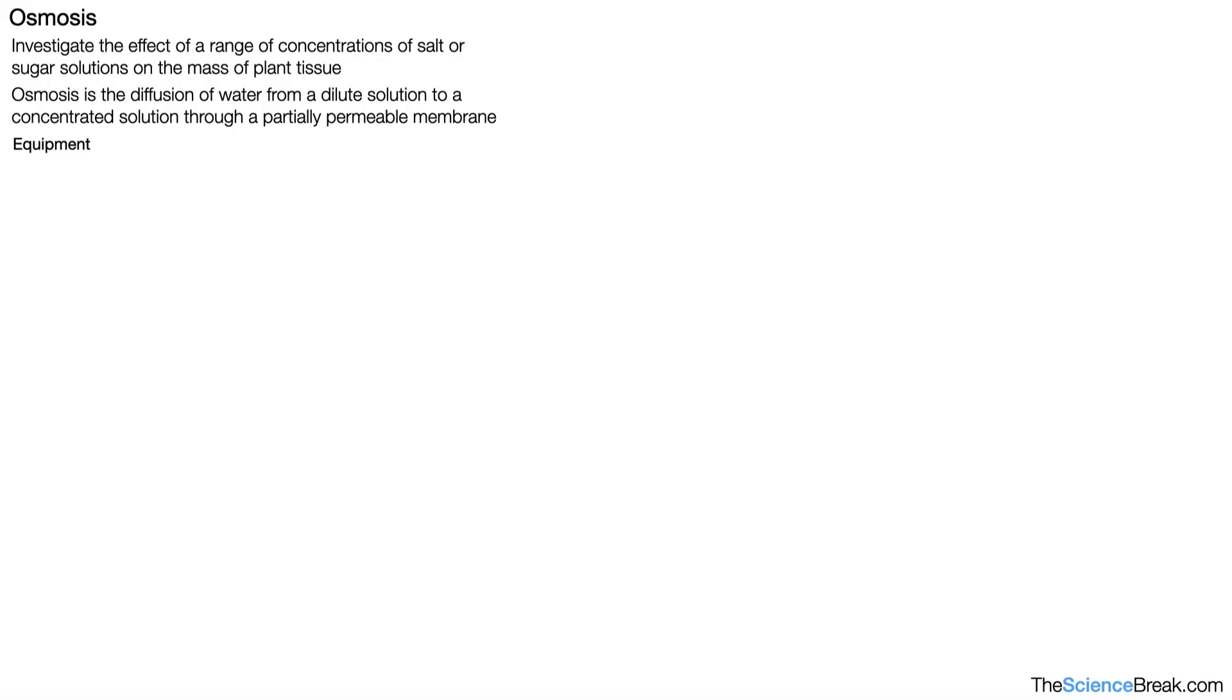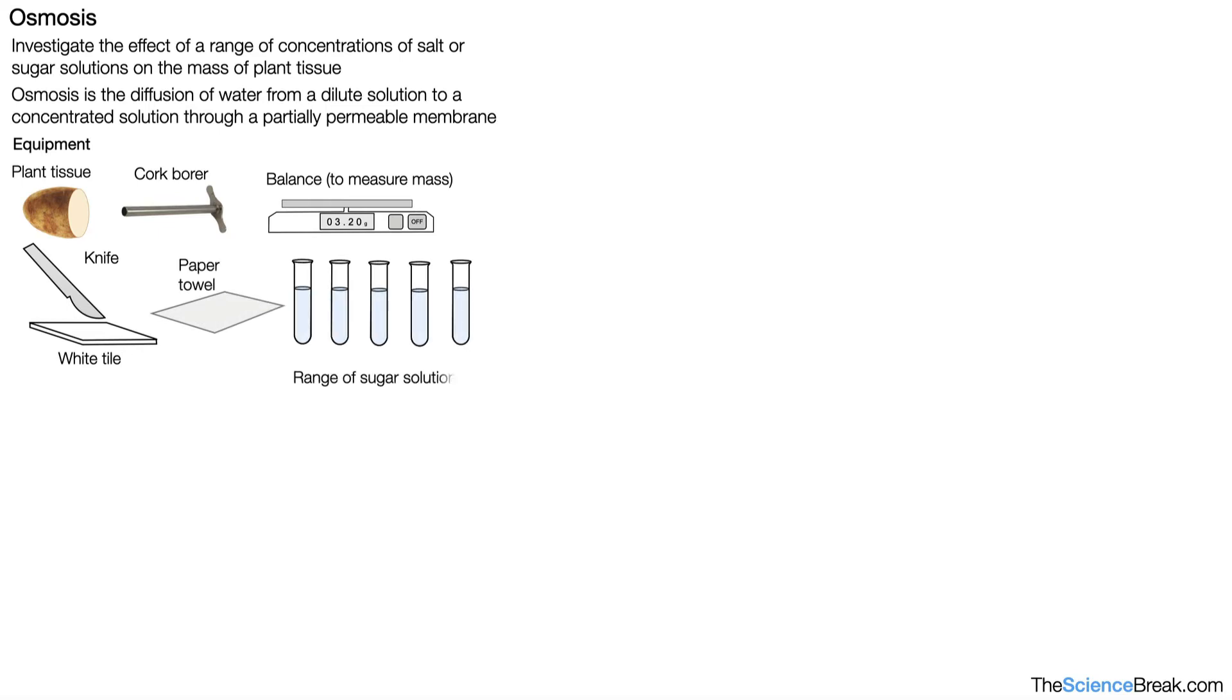For our experiment, the following equipment is required: plant tissue, often potato but could be other tissue like carrot; a cork borer which helps us make very precise cylindrical shapes; a balance to measure mass; a knife and white tile to help us cut potato pieces to similar lengths; a paper towel for drying; and a range of sugar solutions. These solutions could be salt solutions as well, but for our example we're using sugar solutions.